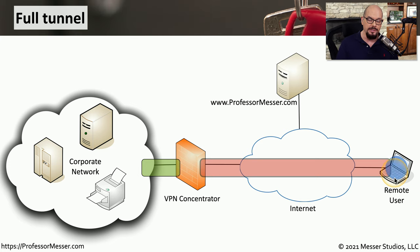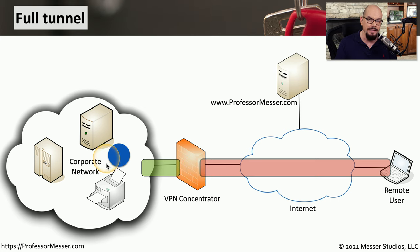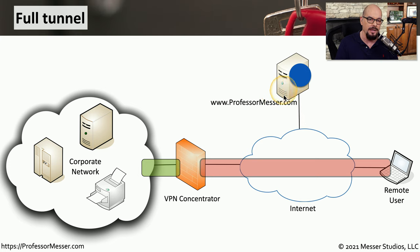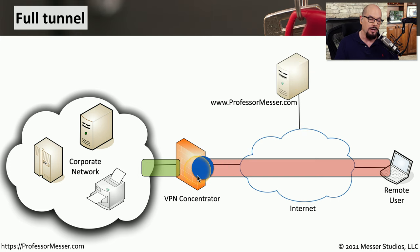So if the remote user wants to send information to the corporate network, it will be sent to the VPN concentrator, which would then decrypt it, send it into the corporate network, and then that information will be sent back to the remote user. But if the remote user wants to connect to another third-party device, such as professormesser.com, with a full tunnel it has to communicate to the VPN concentrator, which communicates to the web server, and the result is then reported back through the VPN concentrator to the remote user.